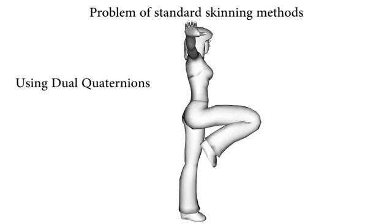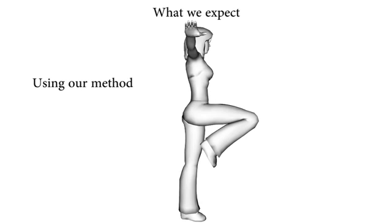Dual quaternion skinning improves volume preservation, but bulges the shape at joints, does not generate contact, and is also prone to self-intersections.